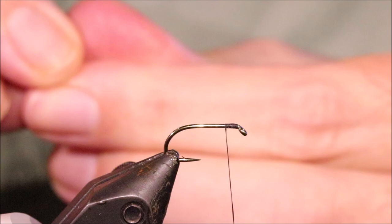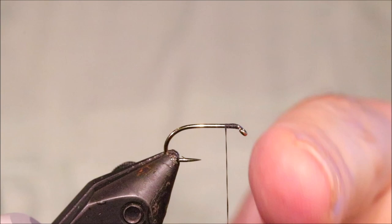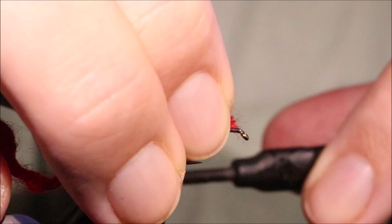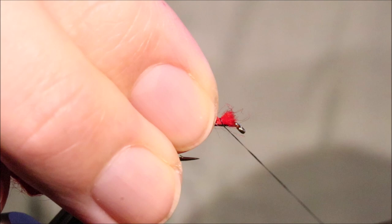So I've got my hook and my vise, this is a size 12 Kamasan B175. Tie these probably like 8s down to 14s and I've started some black unit 8-aught and just at the length of where the body's going to start I'm going to catch in my tail on the way down and it's just some red wool.